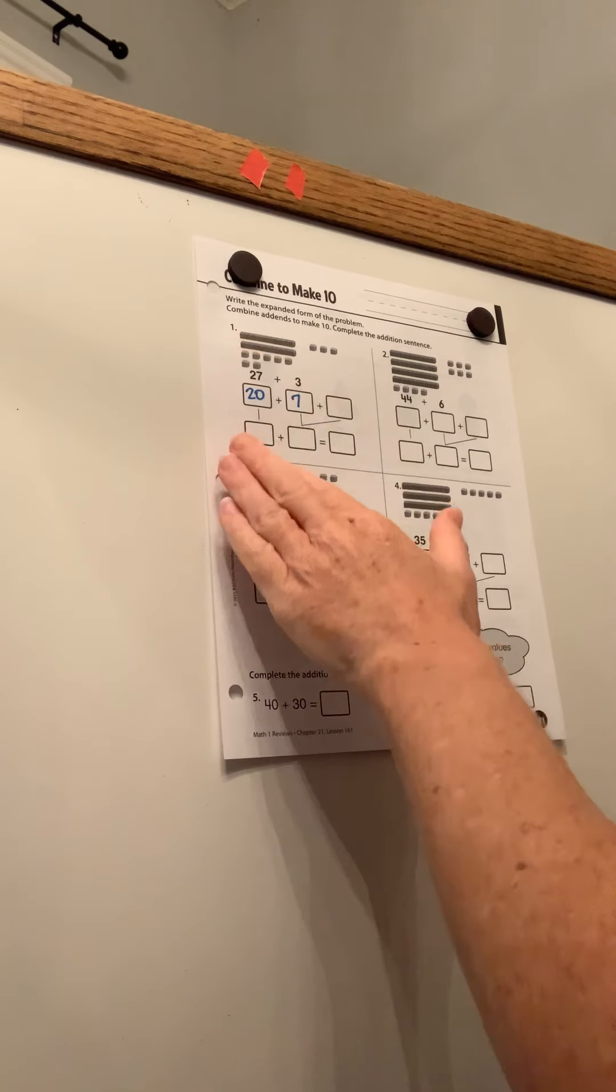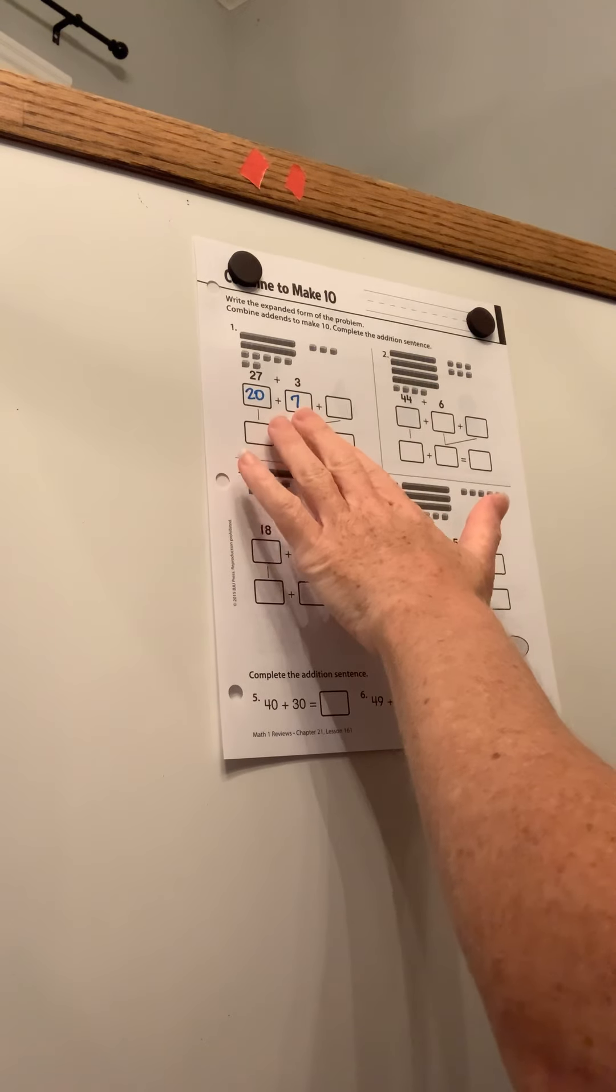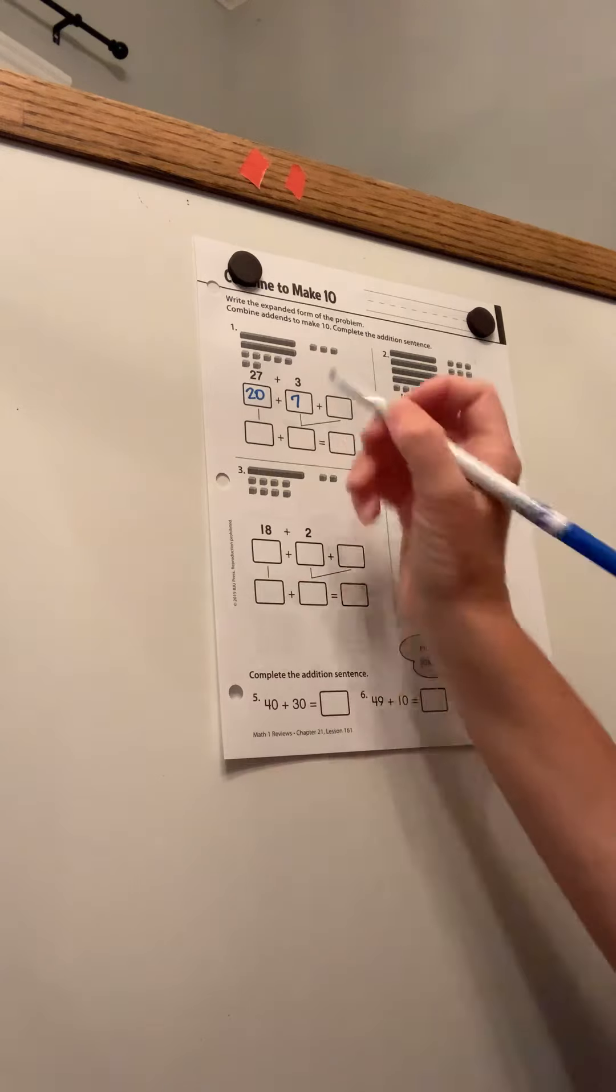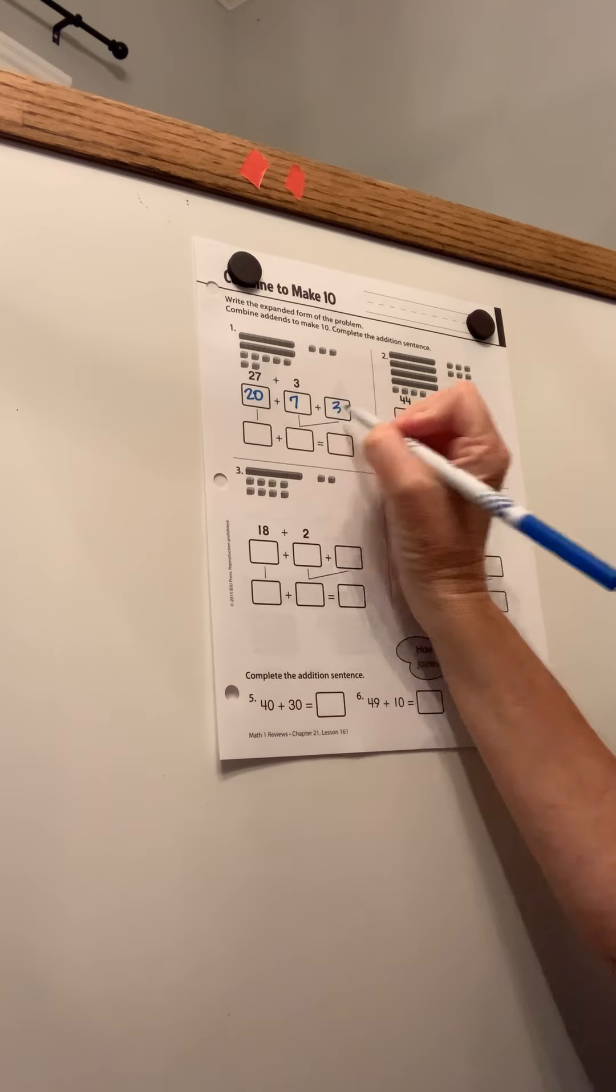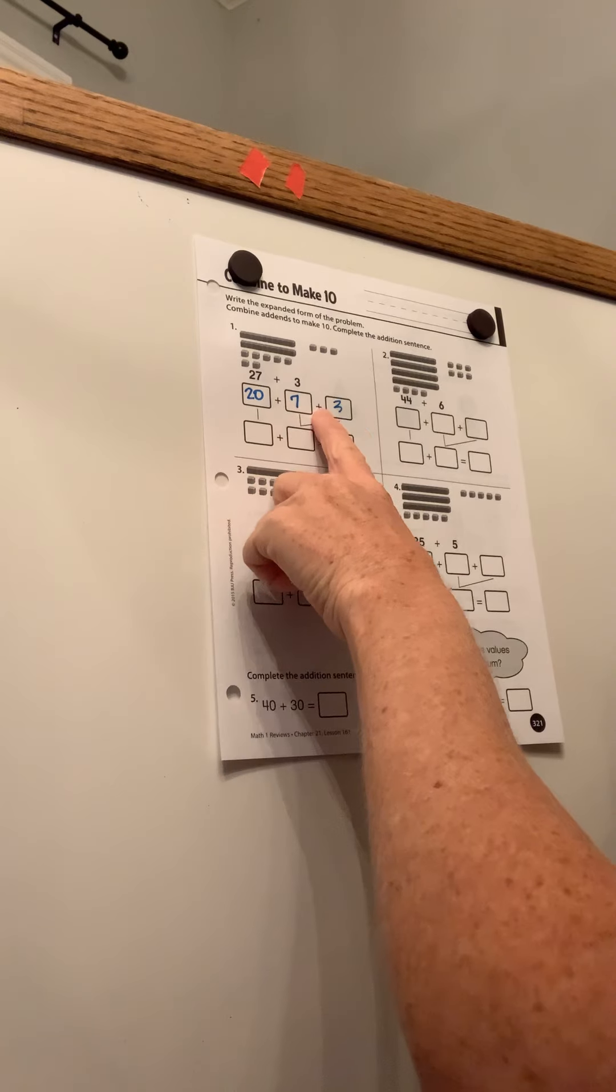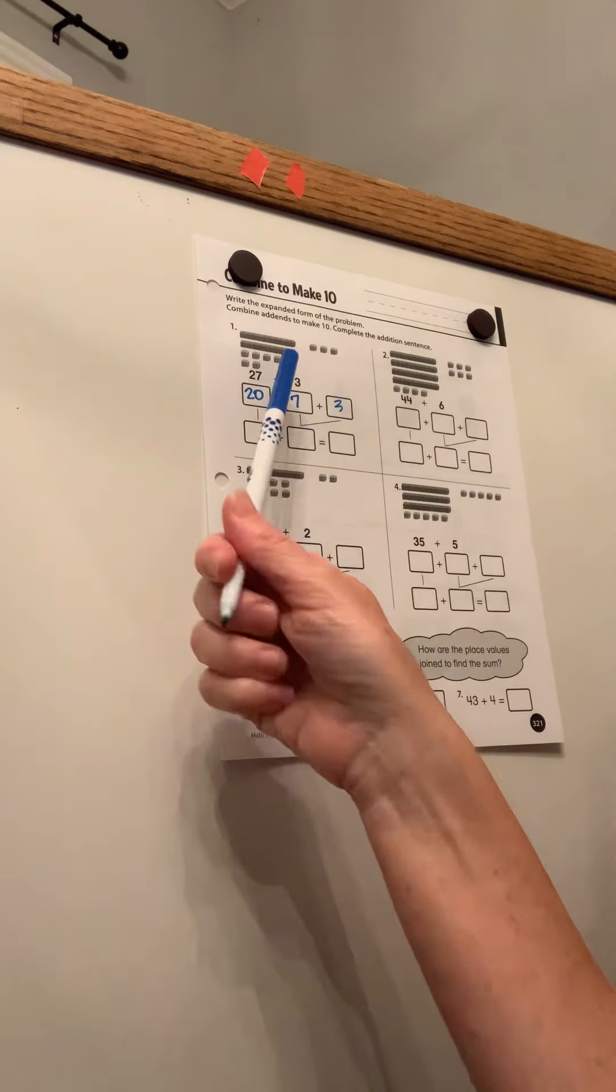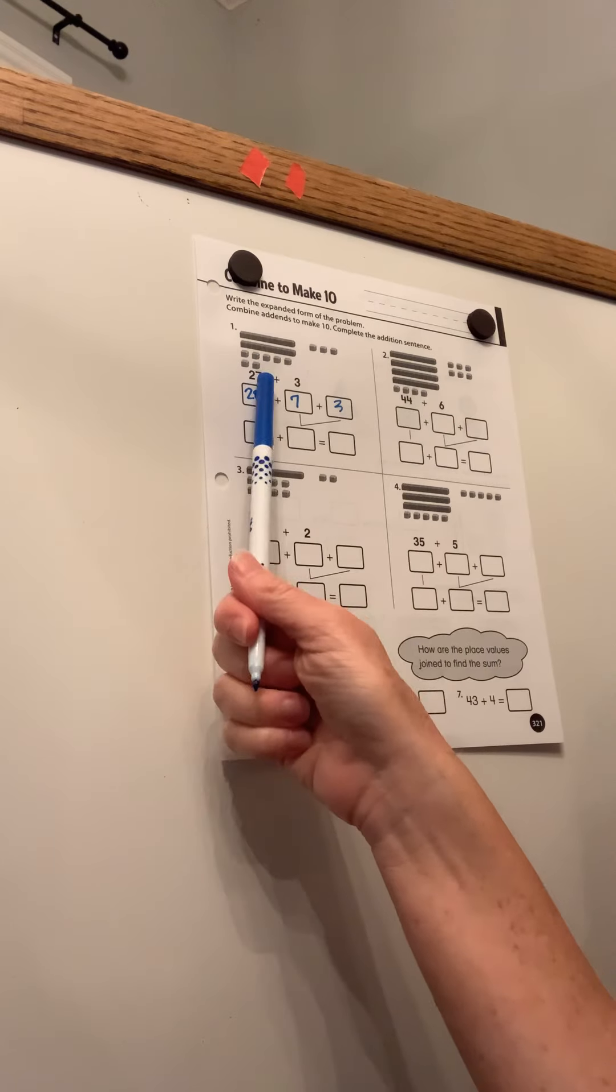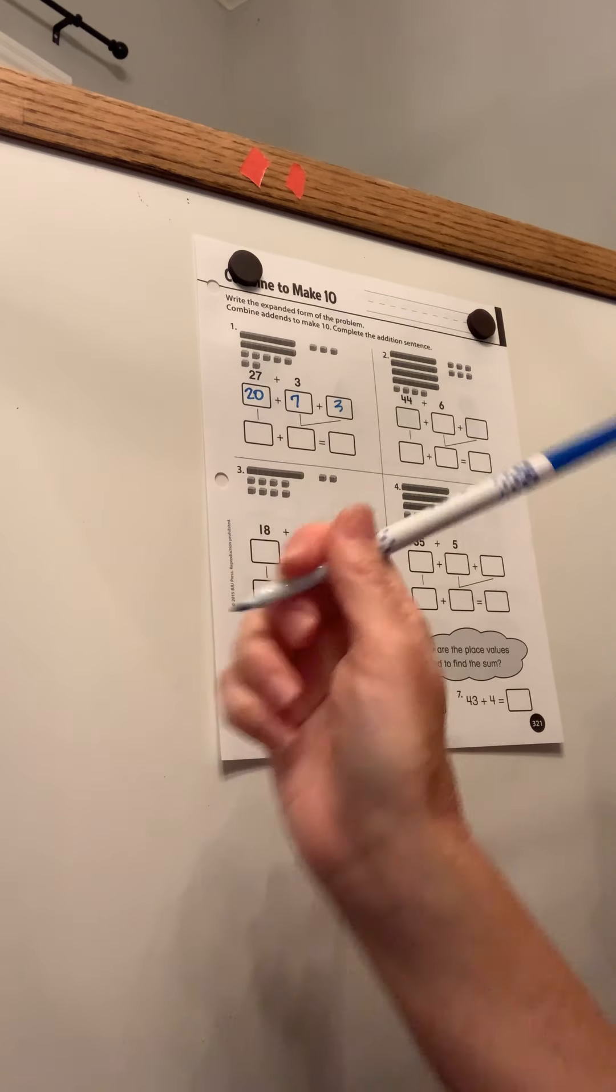If I break that apart by tens and ones, I would have 20 and seven because that's how I would break apart 27. Here's my tens. I have 20 in the tens place. I have two tens and then I have seven ones. And then I'm just going to bring the three from the problem over there. So my problem now is 20 plus seven plus three. It's the same thing as up here. I have just broken apart the 27 into 20 and seven.